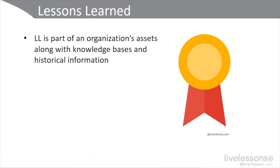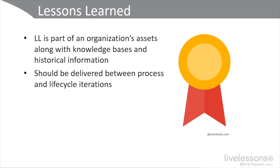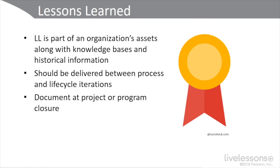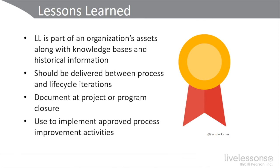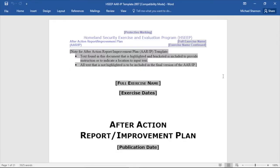Another key concept is lessons learned. Lessons learned is part of an organization's assets — not a physical asset but a logical, intangible one — and it goes along with your knowledge base and historical information. It should be delivered between processes and lifecycle iterations, not just at the end. You will document lessons learned at the closure or disposition of a project or program, and use them to implement approved process improvement activities. You might also use an after-action report, commonly used by FEMA, Department of Homeland Security, and the military, and the two often work hand-in-hand.